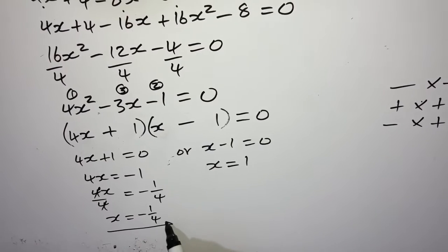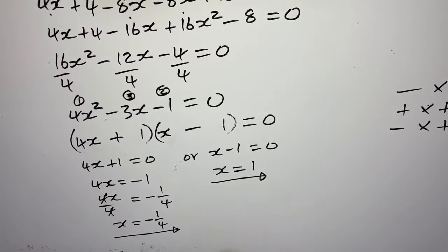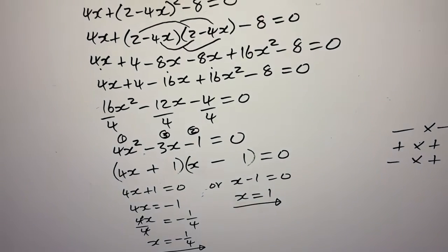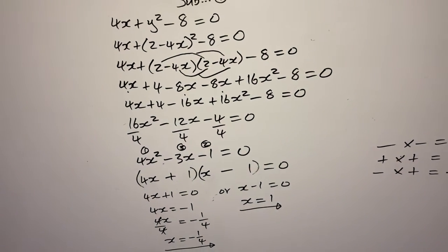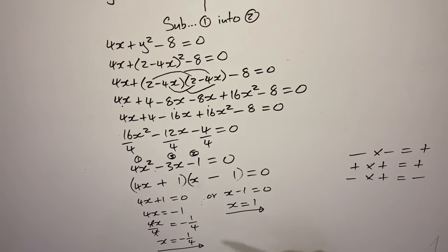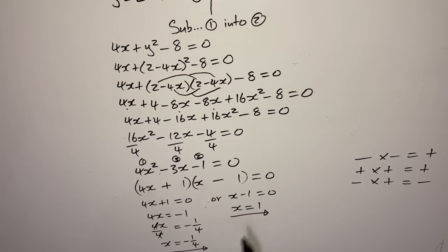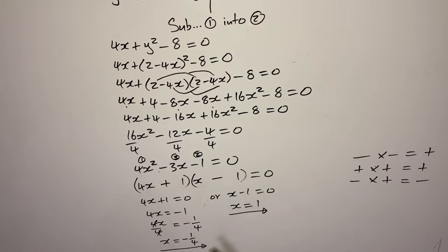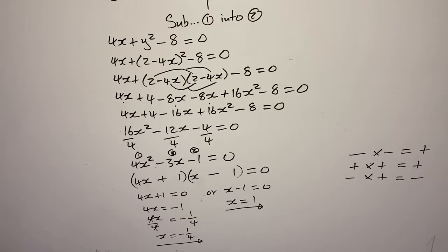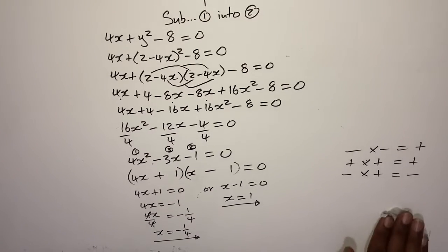Substituting the first x value — x = negative 1 over 4 — into equation 1: y = 2 minus 4 times (negative 1 over 4). That gives y = 2 minus (negative 4 times negative 1 over 4). So 4 times negative 1 over 4 gives negative 1, but with the negative, it becomes positive 1. Therefore y = 2 plus 1 = 3.